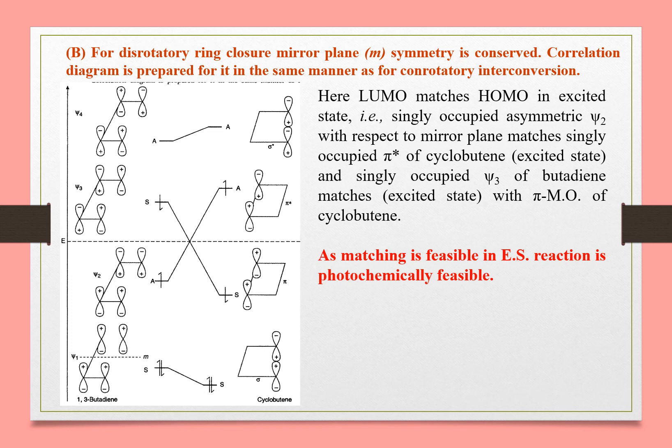For the disrotatory ring closure, we add the mirror plane symmetry to the two sets of orbitals — for reactants and products — and examine the symmetry with respect to the mirror plane.